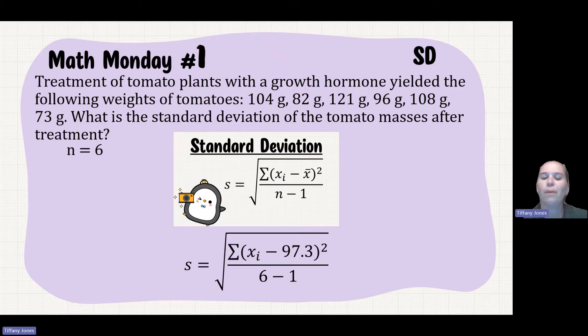And we sub that into the formula. So I'm gonna do the summation of my individual values. So the 104, the 82, and so on, minus 97.3, that is my mean. If you again go to that last video, you'll see how I calculated that mean. And I'll take each of those and I'll square them and I'll add them all together and divide by six minus one, because my sample size was six.